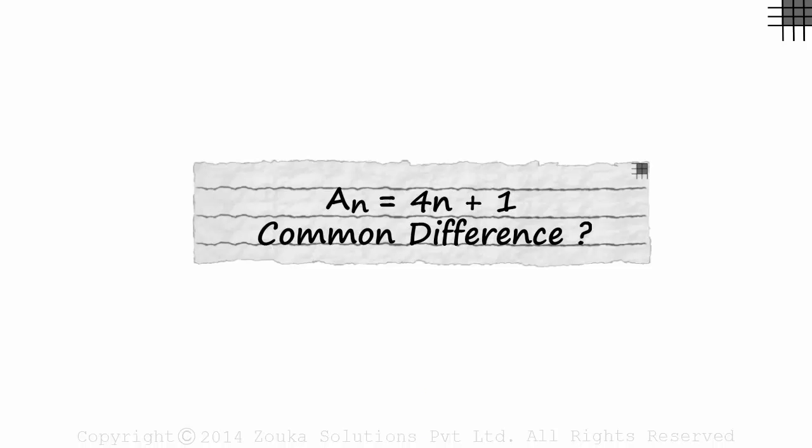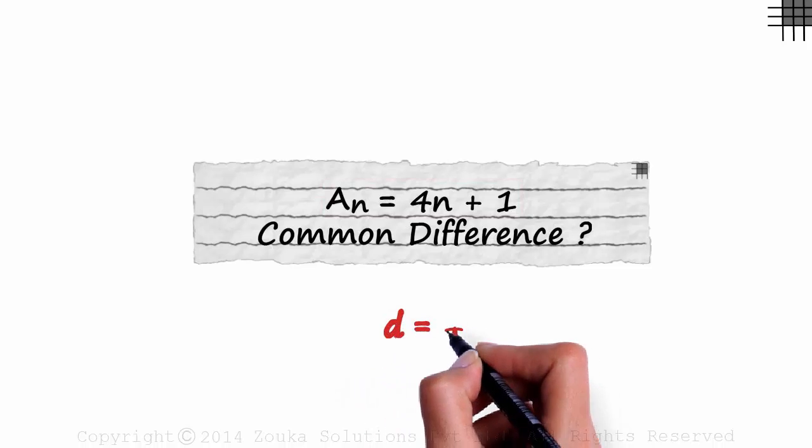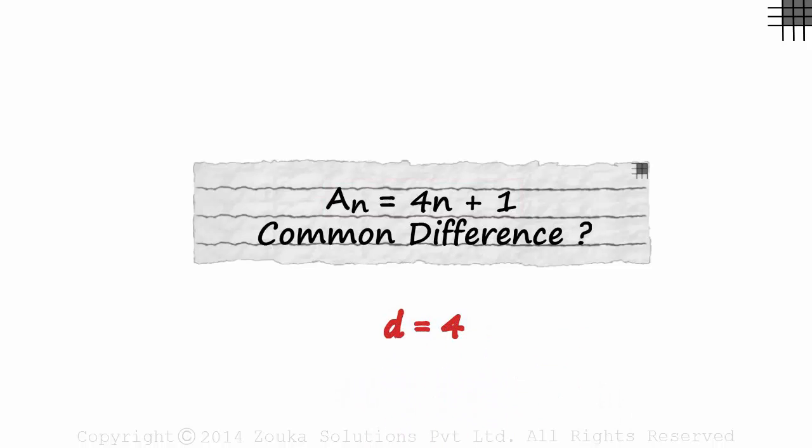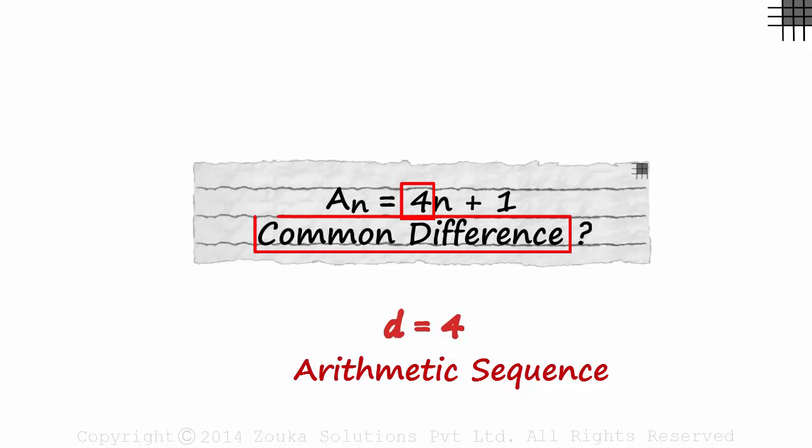It should have taken you just one second. Yes, just one. Just by looking at the sequence, we can say that the common difference d is equal to 4. In an arithmetic sequence, the coefficient of n is the common difference.